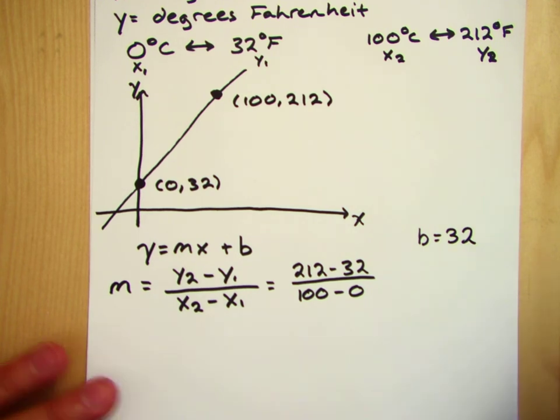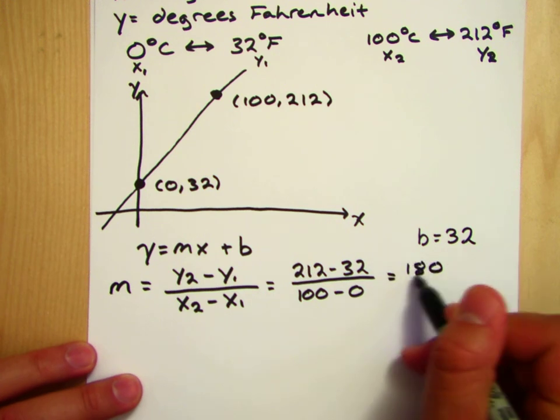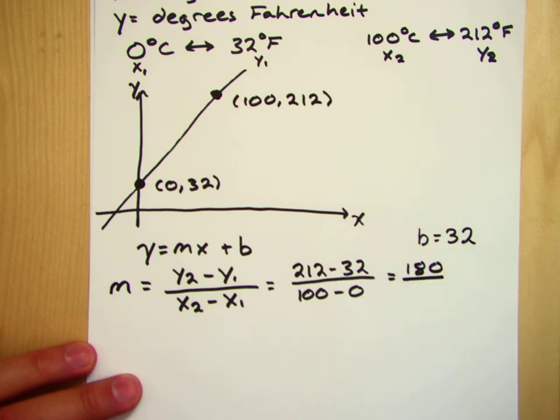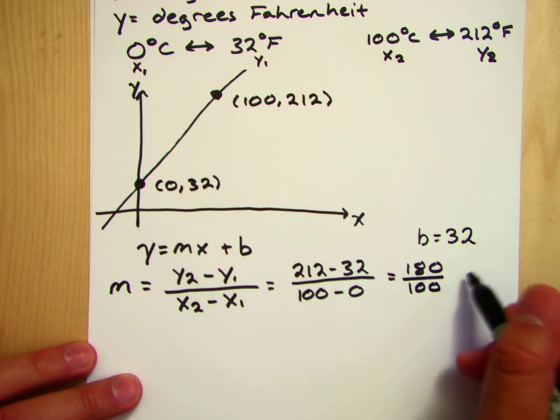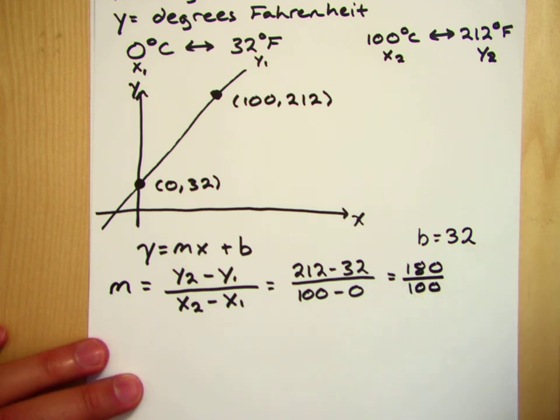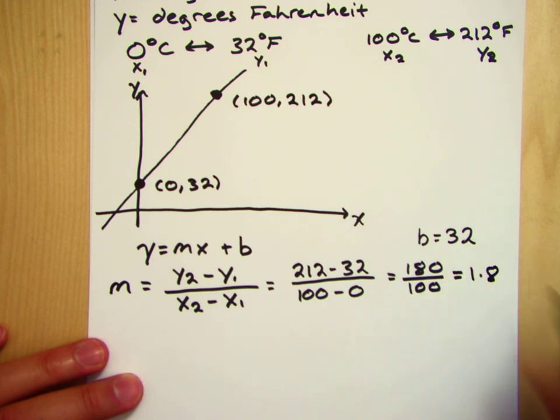So, just checking my arithmetic here. So 212 minus 32 is 180 and 100 minus 0 is just 100. So 180 over 100 is 18 tenths or 9 fifths or just simply 1.8.